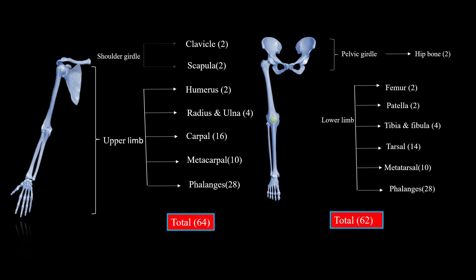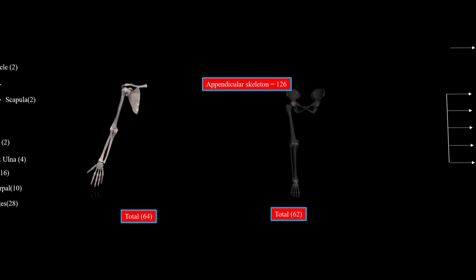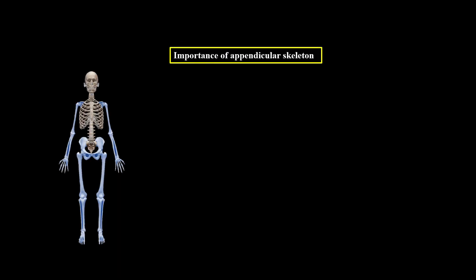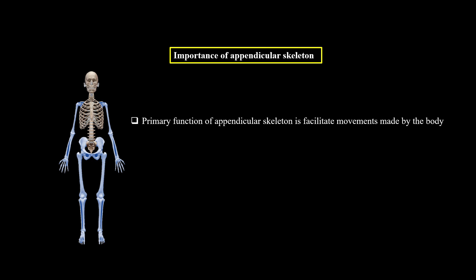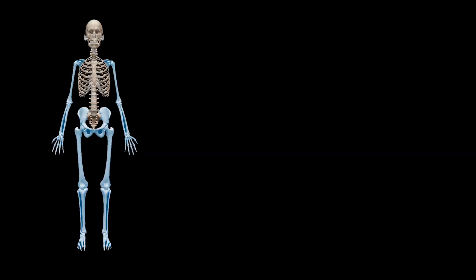So total bones in the Appendicular Skeleton is 126, which may further divide into upper limb with shoulder girdle and lower limb with pelvic girdle. The primary function of the Appendicular Skeleton is to facilitate movements made by the body, and both the pelvic and shoulder girdle transmit the weight from the upper axial skeleton to the limbs.